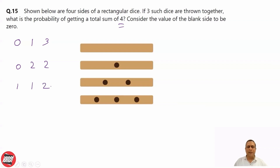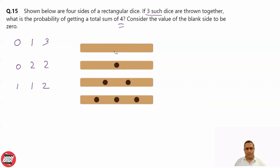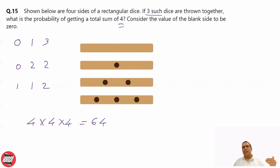There are no other cases. How many total cases? So basically three dice are there, and each dice is having four faces. When you throw the first die, any of the four faces can come. Second time, any of the four can come. Third time, any of the four can come. So that is total 64. The denominator of probability is 64 — total number of cases.